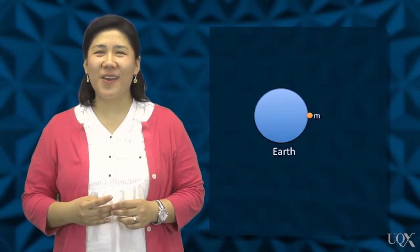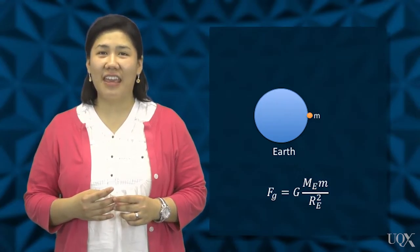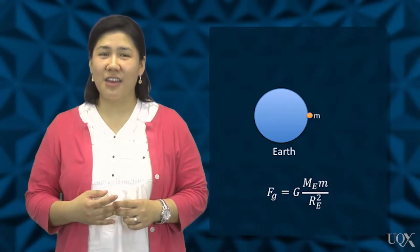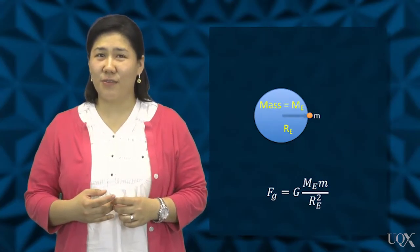The force between the Earth and a mass m would be Fg equals G mE m over rE squared, where mE and rE are the mass and radius of the Earth, respectively.